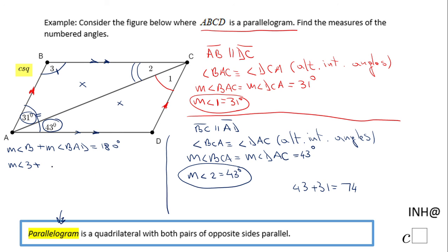Okay. So measure of angle 3 plus 74 equals 180. And the last thing, we subtract 74 on both sides.